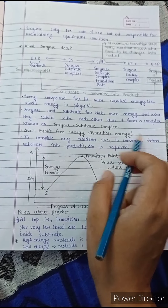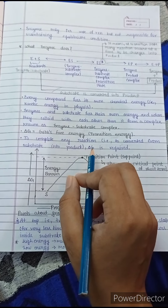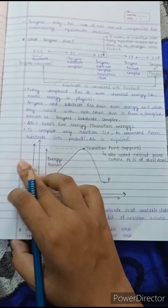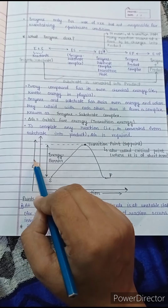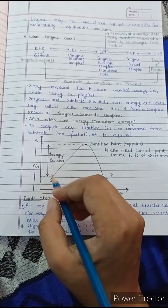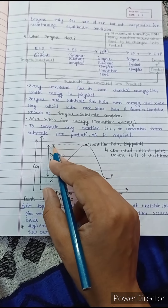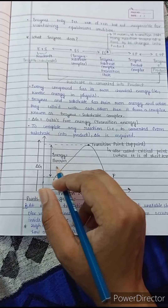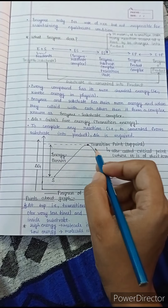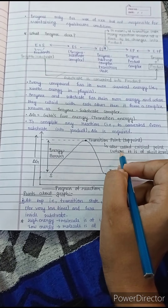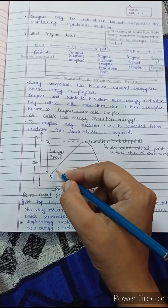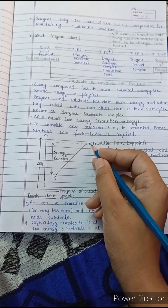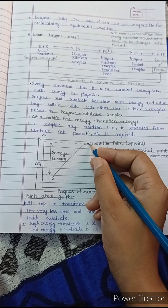Delta G is required to complete any reaction, that is, to convert the substrate into the product. Now we will see a graph to understand this phenomenon. The Y-axis is Gibbs free energy and the X-axis is progress of reaction. The substrate must cross an energy barrier to reach the transition state. If that energy barrier is crossed, the enzyme-substrate complex converts into the product. The top point of the graph is called the transition point or critical point, and it exists for a very short time.